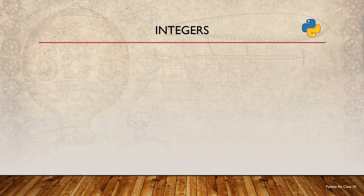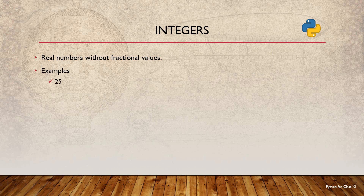Now let me consider integers first. Integers are the real numbers without fractional values. For example, 25 is an integer, 0 is an integer. Note that integers can be either positive or negative numbers, so negative 100 can also be considered an integer. I will now show various examples practically using interactive mode at the command prompt.